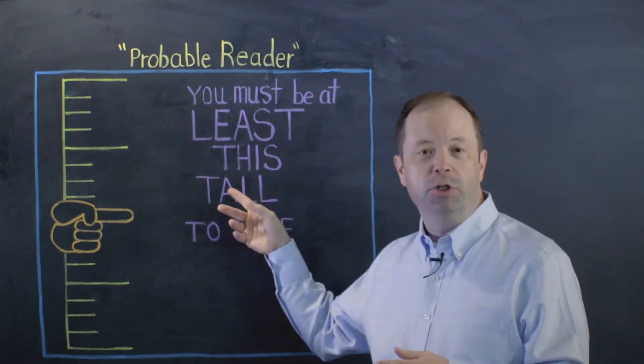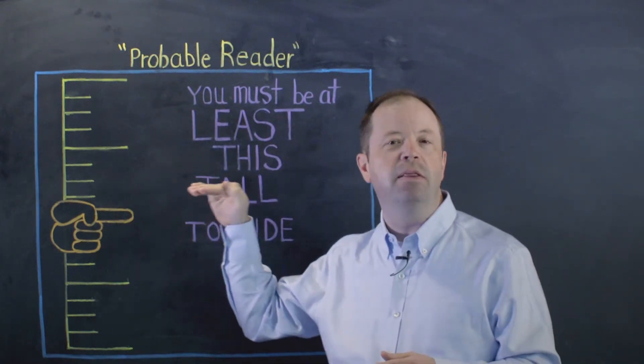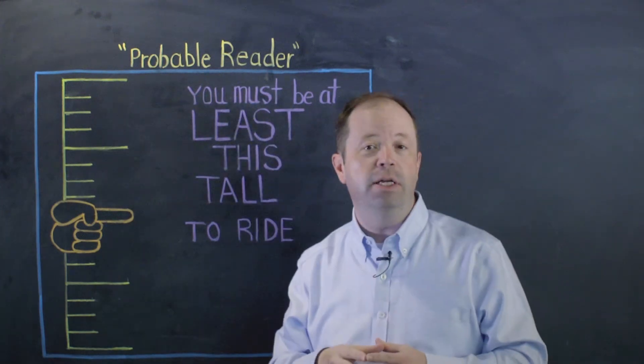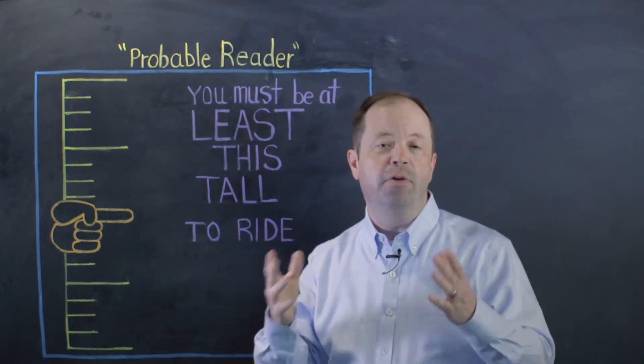It's kind of like being in the amusement park, and you saw that sign that says, you must be this tall to ride this ride. And Probable Reader is how tall a student needs to be on STAR early literacy before they'll be able to access the language and the content that they will see in STAR reading and STAR math.